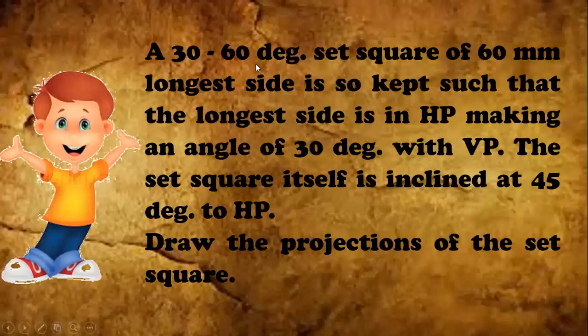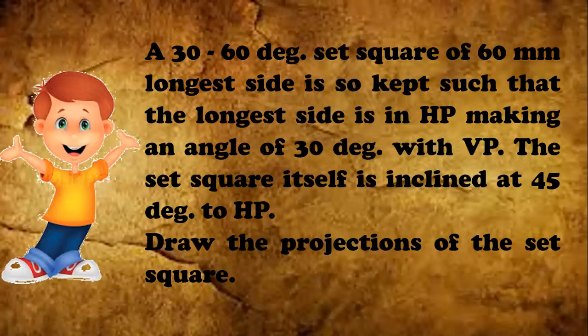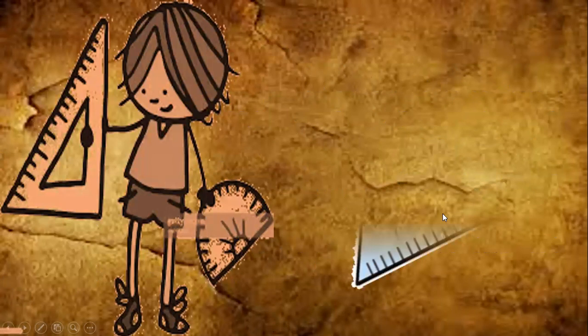This is a problem of a set square where two angles are given — 30 degrees and 60 degrees — and the longest side is 60 mm. It is kept resting on its longest side in HP. The first position is in HP, the second position is the inclination with respect to HP, and the third position is the inclination with respect to VP. You need to draw the projections of the set square.